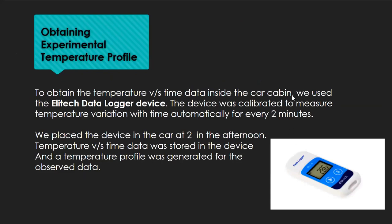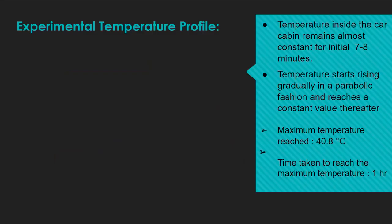To obtain the experimental temperature profile, we use Elitec data logger device. The device, we calibrated it for every 2 minutes so that it measures the temperature data in the car cabin automatically. We then placed the device in the car at 2 in the afternoon. The device stored temperature versus time data and a temperature profile was generated for the observed data.